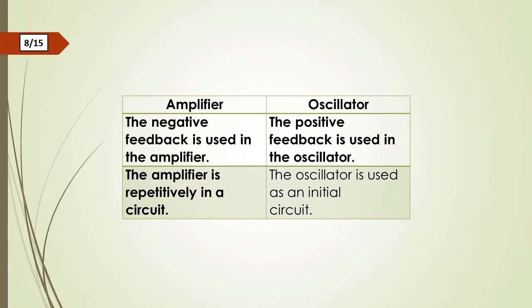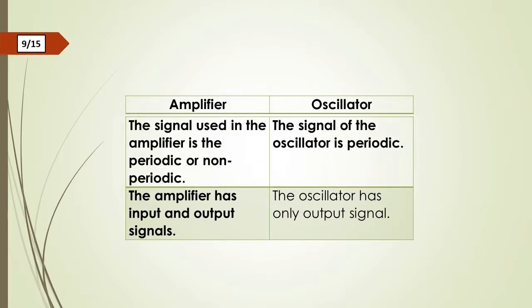The amplifier is repetitively in a circuit. The oscillator is used as an initial circuit. The signal used in the amplifier is periodic or non-periodic. The signal of the oscillator is periodic. The amplifier has input and output signals. The oscillator has only output signals.